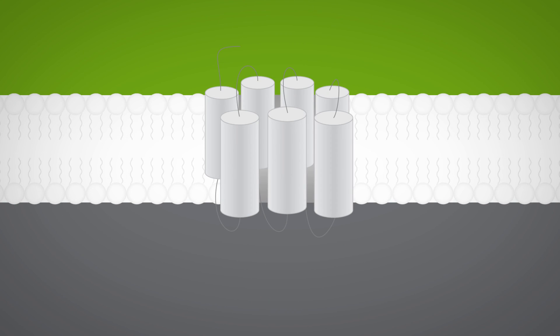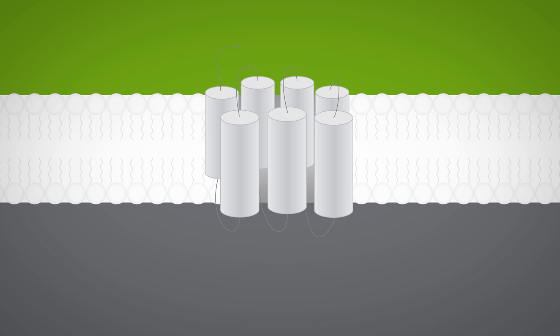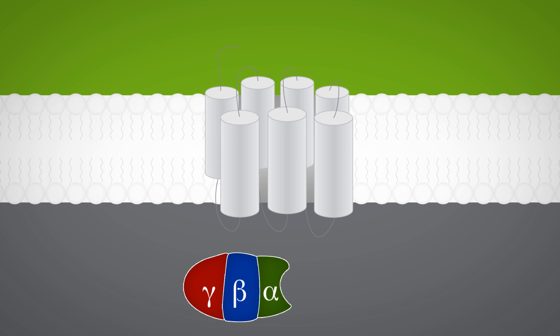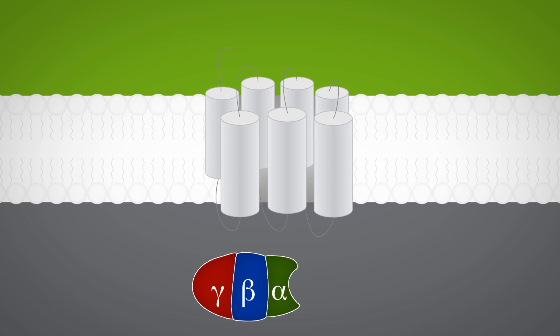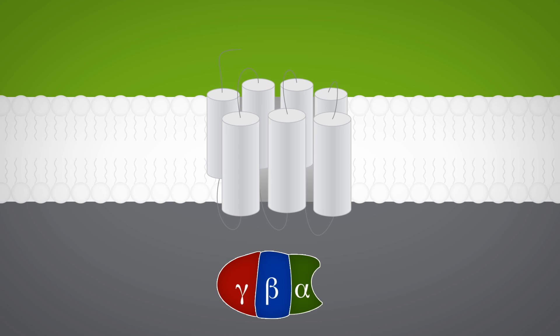A different class of receptors is the G-protein coupled receptor, or GPCR, which are part of a group known as metabotropic receptors. As the name implies, these are paired with a G-protein, or guanine nucleotide binding protein, which is composed of three functional units,